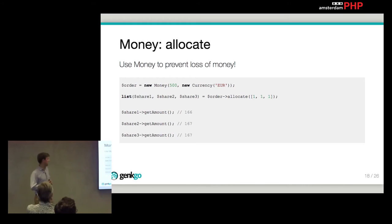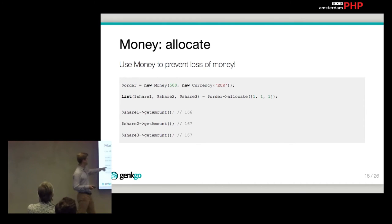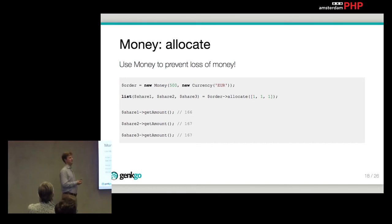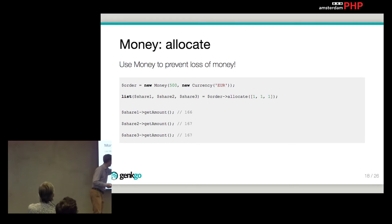The other problem was the investors scenario. You have 500 that you want to divide over three investors each having an equal share. You can use `allocate` inside the money object and it will make sure you don't lose any money — it picks the final one to add the remainder to, ensuring you still have exactly 500. No money will be lost when using the money object.